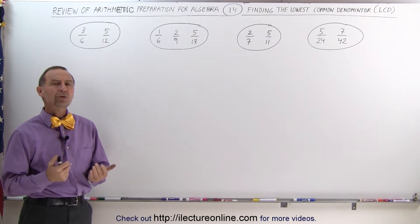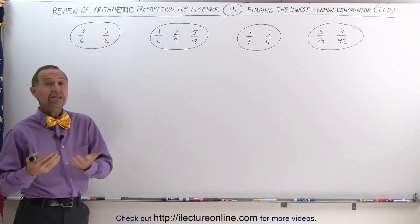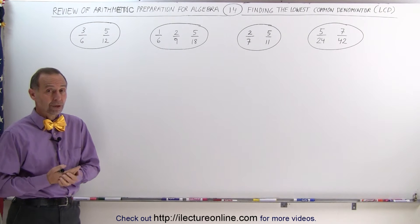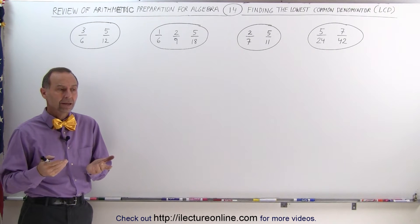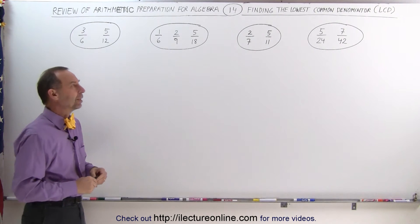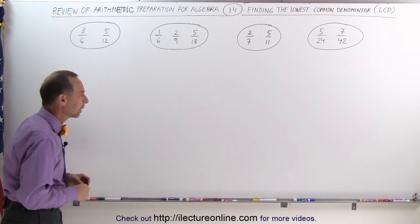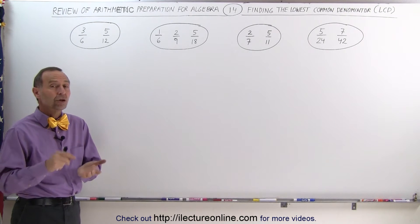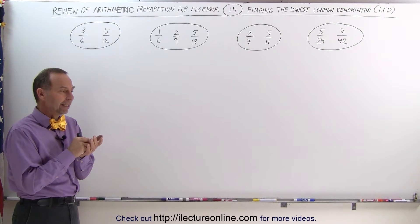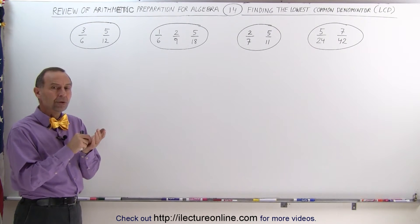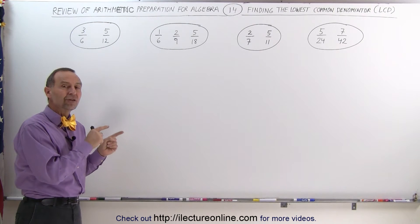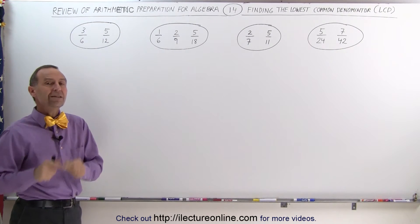How do we do that, and what does it even mean to find the LCD? Before we can do that, we need to know what an LCD is. What is the lowest common denominator? The definition is: the lowest common denominator is a number, is a denominator, that all the other denominators fit into evenly.